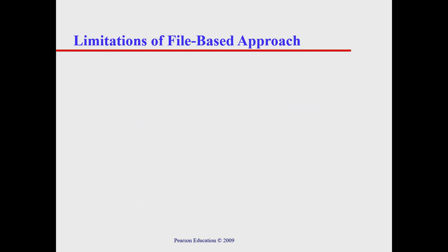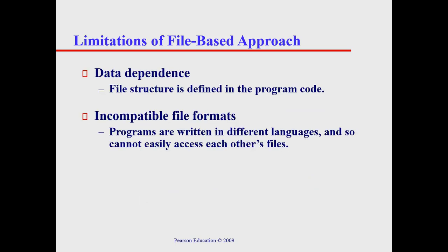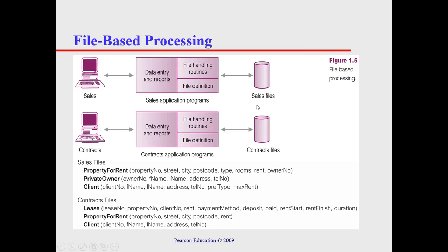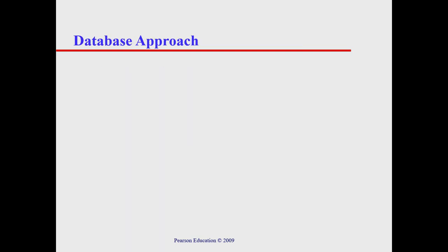Another limitation is data dependency — the file structure is defined within the program code. A fourth limitation is incompatible file formats: programs are written in different languages and so cannot easily access each other's files. If the Sales application uses a different format or programming language from Contracts, we cannot simply exchange these applications. Whenever a change is made, a complete overhaul of the program must be done to accommodate those changes.